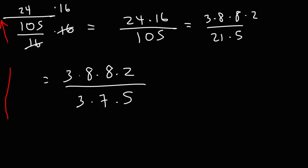And so we could cancel a 3. So we're left with 8 times 8, which is 64. 7 times 5 is 35. And 64 times 2 is 128. So this right here is the final answer. It's 128 over 35.